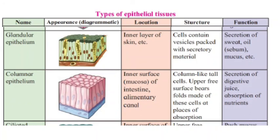Next is columnar epithelium — the name itself tells you it is column-shaped. Its location is the inner surface of the intestine and alimentary canal. Its structure consists of column-like tall cells, where the upper free surface bears folds made up of these cells at places of absorption. Its function is secretion of digestive juices and absorption of nutrients — in the intestine it absorbs nutrients, and in the stomach it secretes digestive juices.